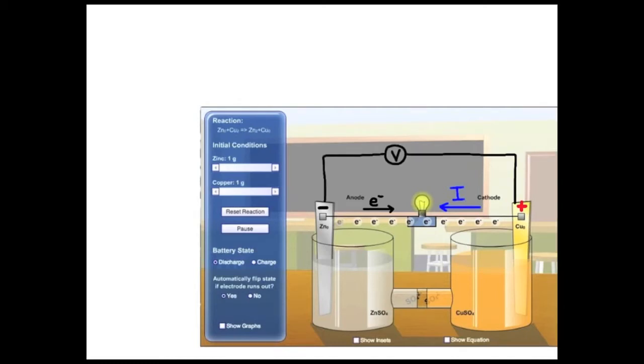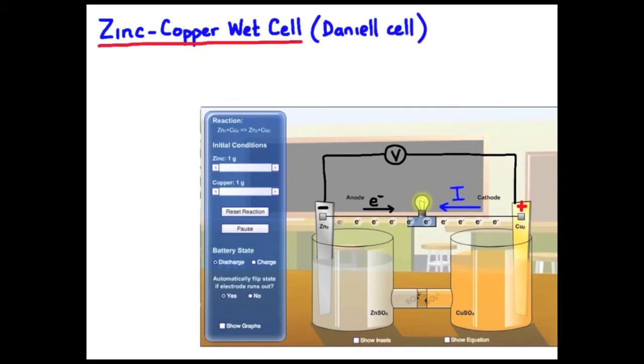This zinc-copper arrangement will give a characteristic potential difference that we can measure using a voltmeter. And this cell is called a zinc-copper wet cell, also called a Daniel cell.